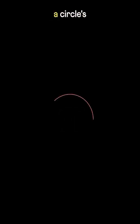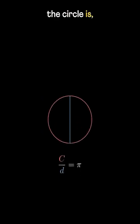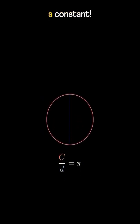This is Pi, the ratio of a circle's circumference and diameter. No matter how big or small the circle is, this ratio always remains the same, a constant.